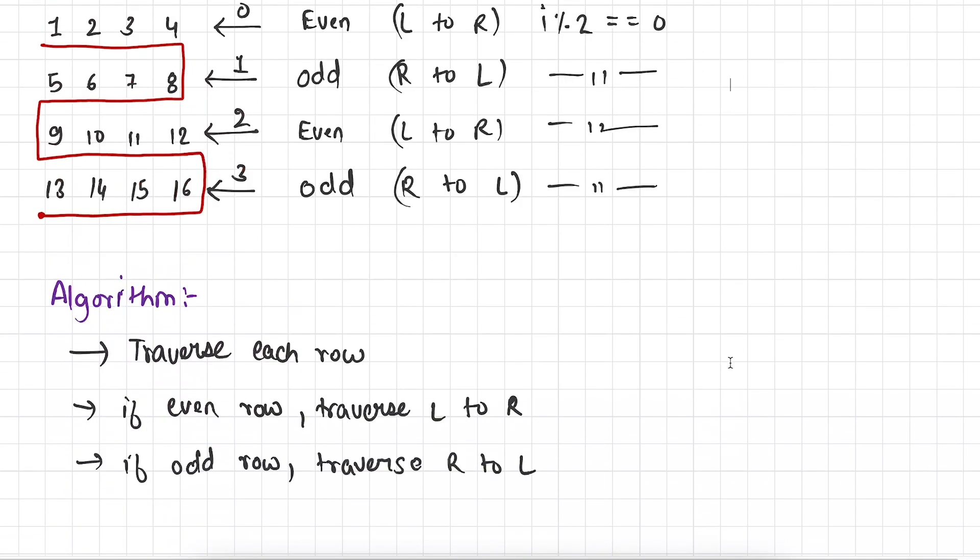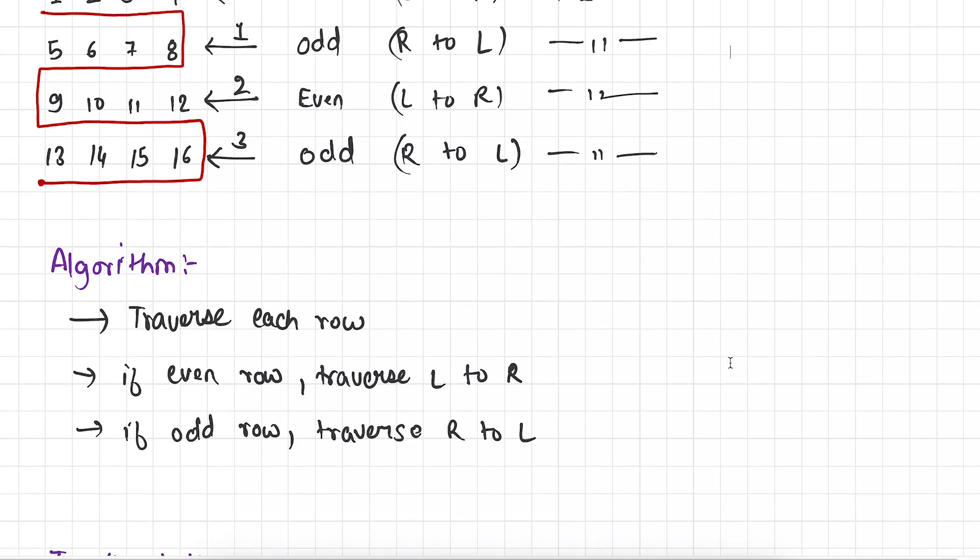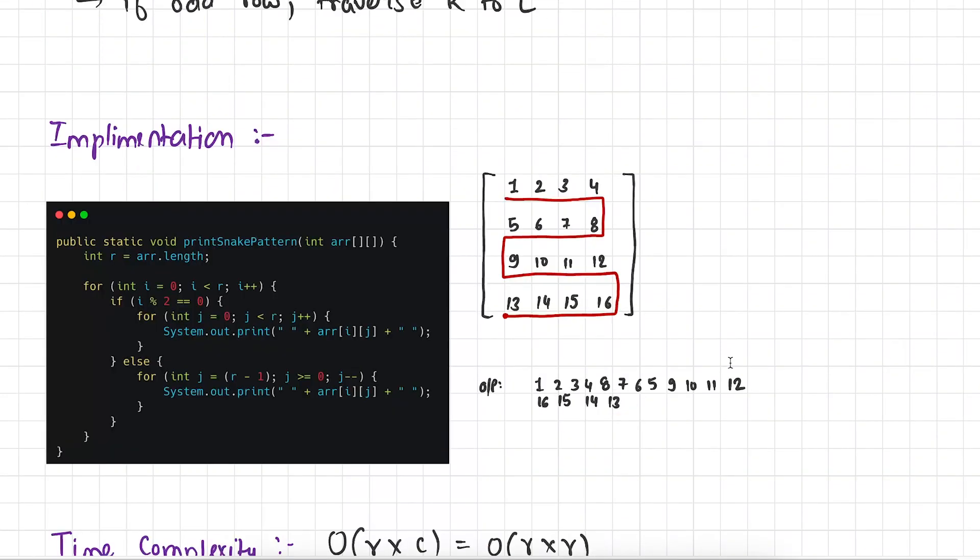And the algorithm looks like this. Just we have to traverse each row. If the index of row is even then traverse left to right. If the index of row is odd then traverse right to left. And this is the algorithm we have to follow. So far so clear. So this is all about the theory. Now let's go ahead and see the implementation of this algorithm.